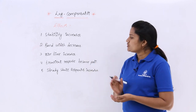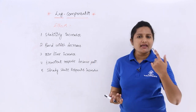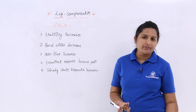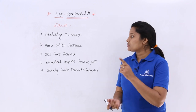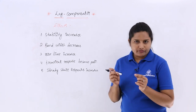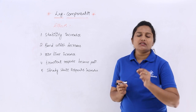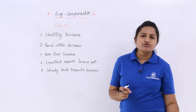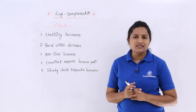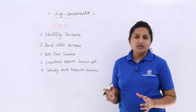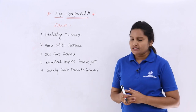Coming to bandwidth — for a lag compensator bandwidth will decrease, whereas for a lead compensator bandwidth increases. So if you want to increase bandwidth use a lead compensator, and if you want to decrease bandwidth use a lag compensator.